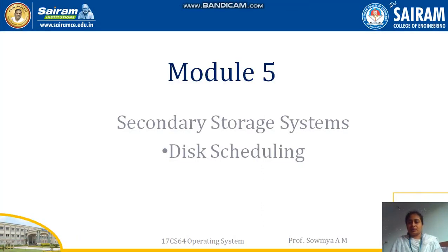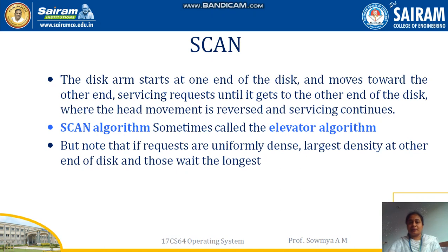This is a continuation of disk scheduling from the previous video. Here we'll see another algorithm: the SCAN method. In the SCAN method, the disk arm moves towards one end. Unlike FCFS or Shortest Seek Time First, the disk arm moves in one particular direction, servicing all queue values along the way. Once it reaches the end, it comes back and moves toward the other end.